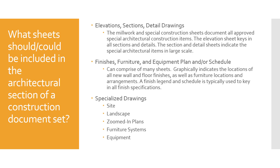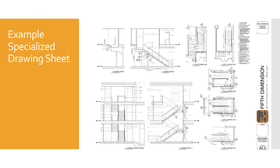There's always room for specialized drawings — things like site plans, landscape plans, and plans that need to be zoomed in. For instance, working on hospitals we'd zoom in on surgical rooms with specialized equipment because you needed to spell a lot of things out for those types of rooms. There can also be furniture system plans for cubicles, equipment plans for hospital labs, and specialized structural drawings — like this example showing the detailed construction of stairs, which is a very complicated structural element that always needs its own separate sheet.